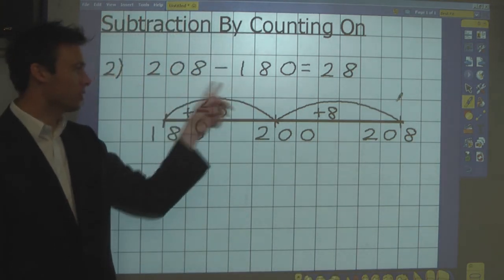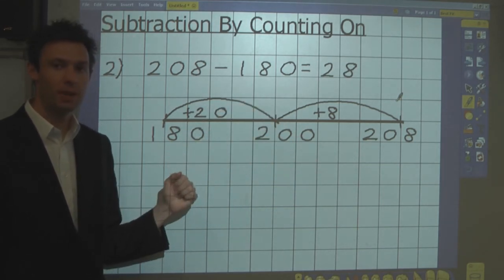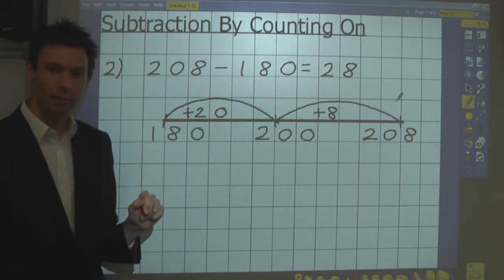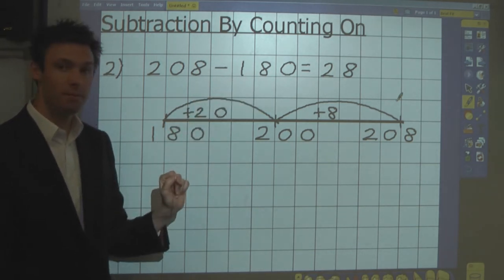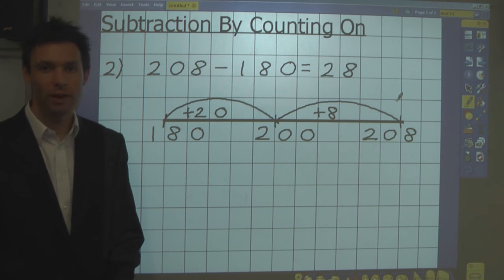So you can find the answer to a subtraction question by counting on as well as counting back. And the choice you make depends on the size of the number you're taking away. If you're taking away a larger number, it's always better to count on. You get to the answer much more easily. And that is how you subtract by counting on using a number line.